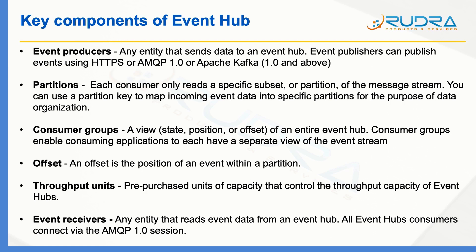The next component is throughput units — pre-purchased units of capacity that control the throughput capacity of Event Hubs. Finally, event receivers: any entity that reads event data from an Event Hub is an event receiver. All Event Hubs consumers connect via an AMQP 1.0 session.